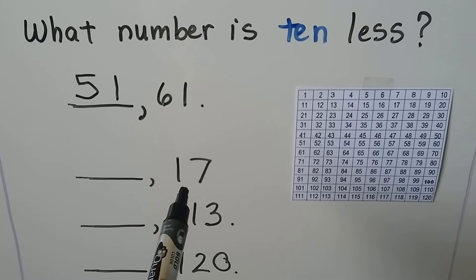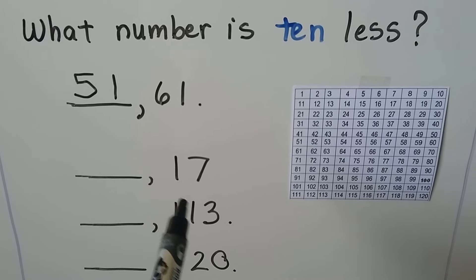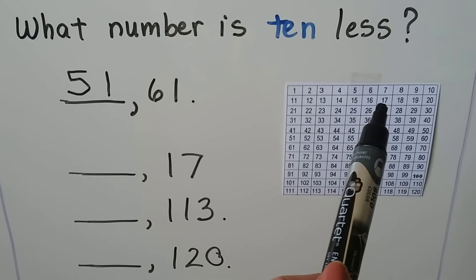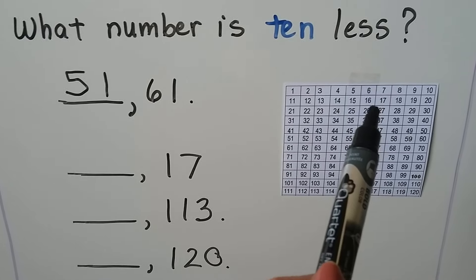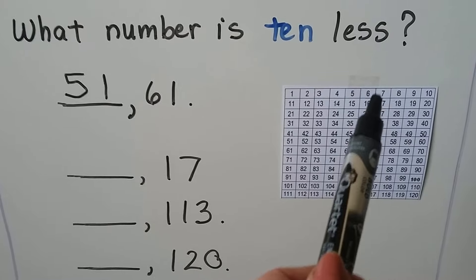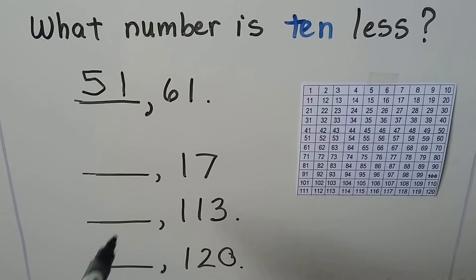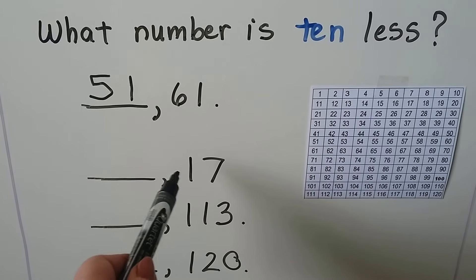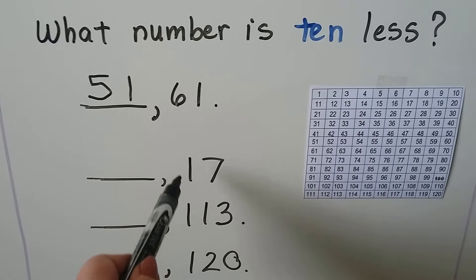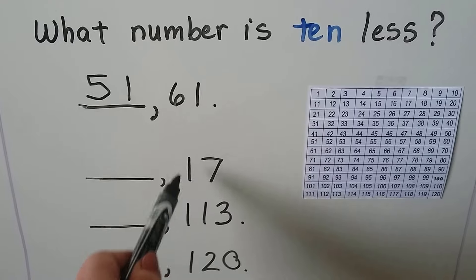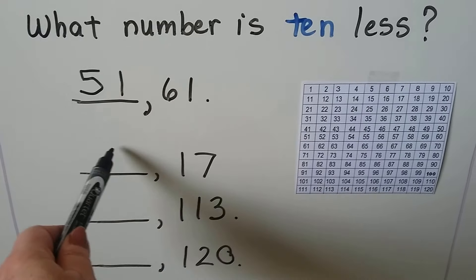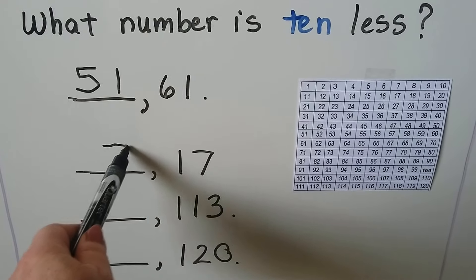What number is 10 less than 17? We find 17 and go up one row — it's a 7. If we take a 10 away, we're taking away the one ten, so we just have a 7.